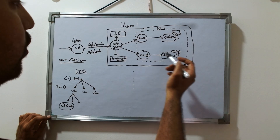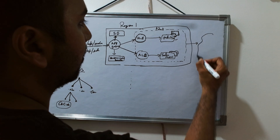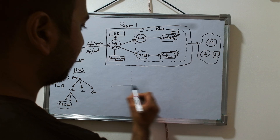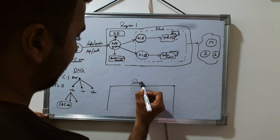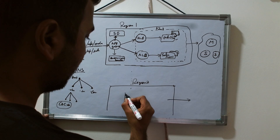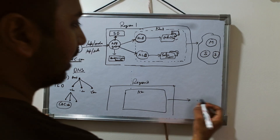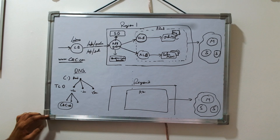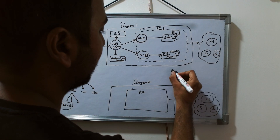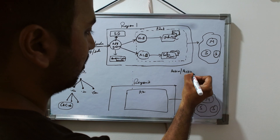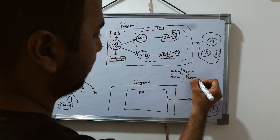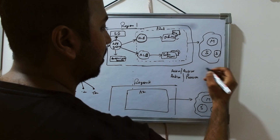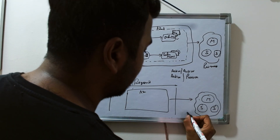Within each AZ you have a master-slave database setup — a master DB and one or more slave DBs. There may be another region, Region 2, which also has its own AZs and a master-slave architecture. This master-slave setup can be configured as either active-active or active-passive. In active-passive, one DB cluster is the primary and another is the Disaster Recovery (DR).